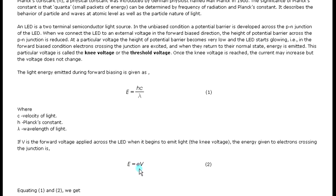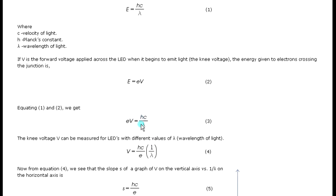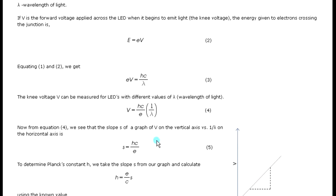Equating equations 1 and 2 we get eV equals hc upon lambda. The knee voltage V can be measured for LEDs with different values of lambda, the wavelength of light. We can simplify this equation as V equals hc upon e into 1 upon lambda. From equation 4 we see that slope S of graph of V on the vertical axis versus 1 upon lambda on the horizontal axis is hc upon e.